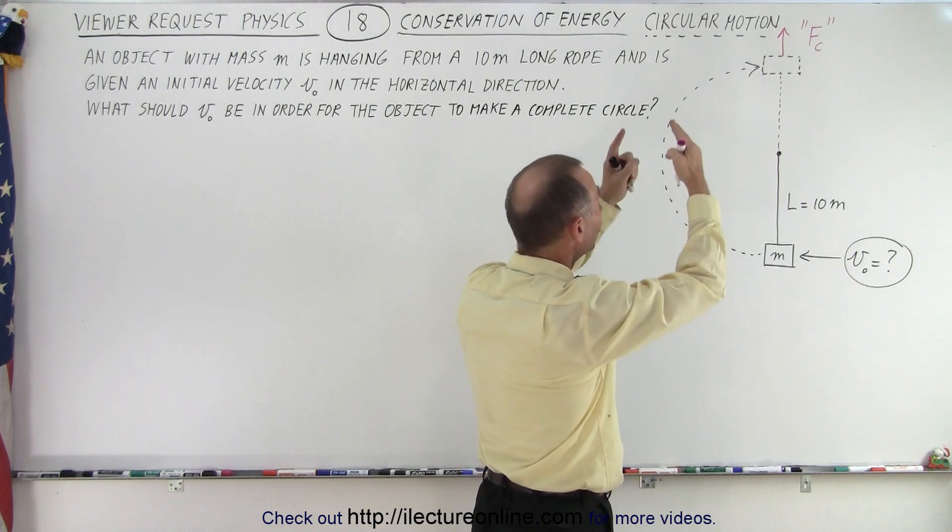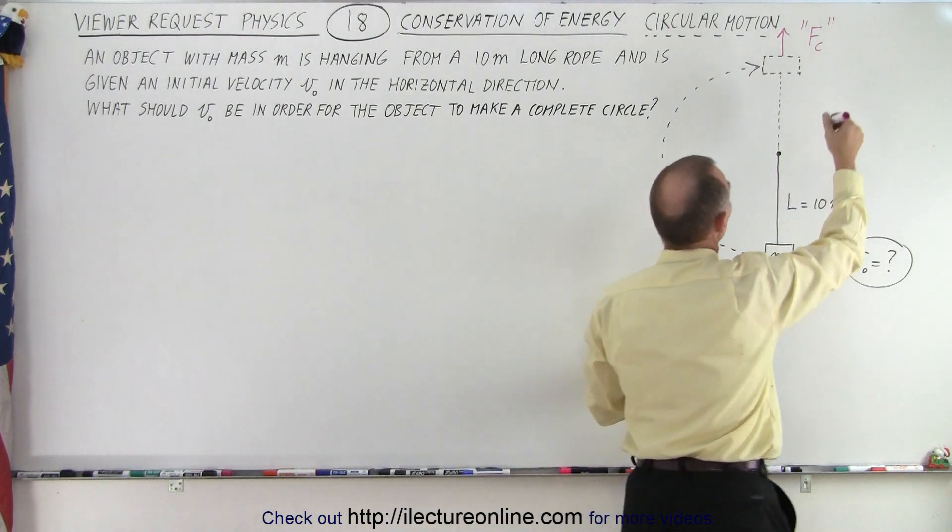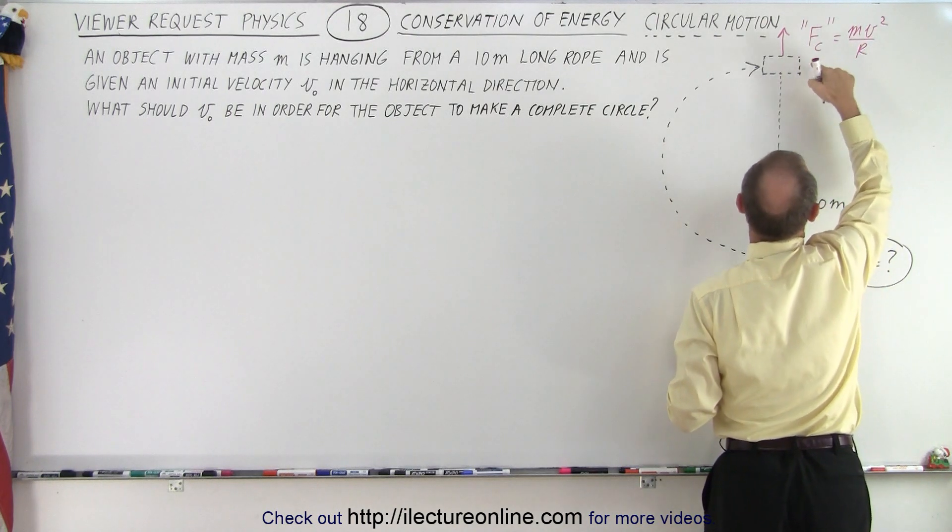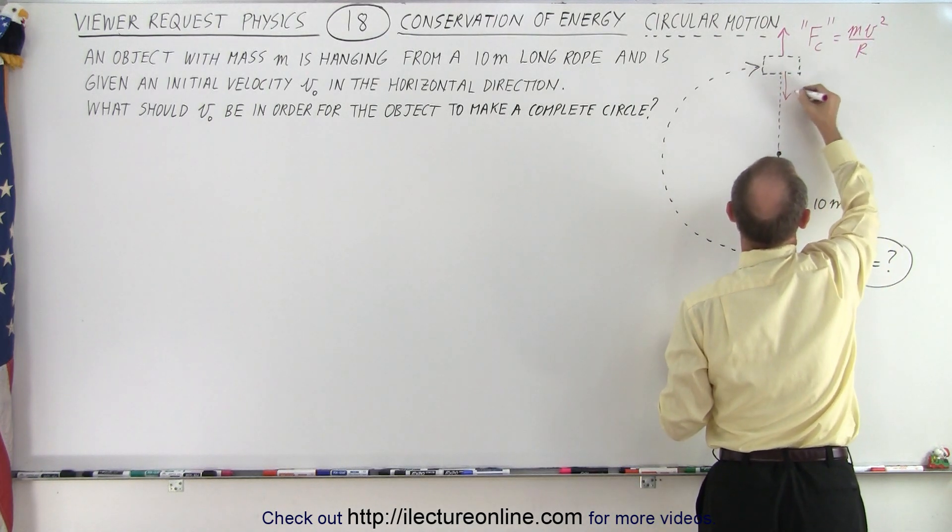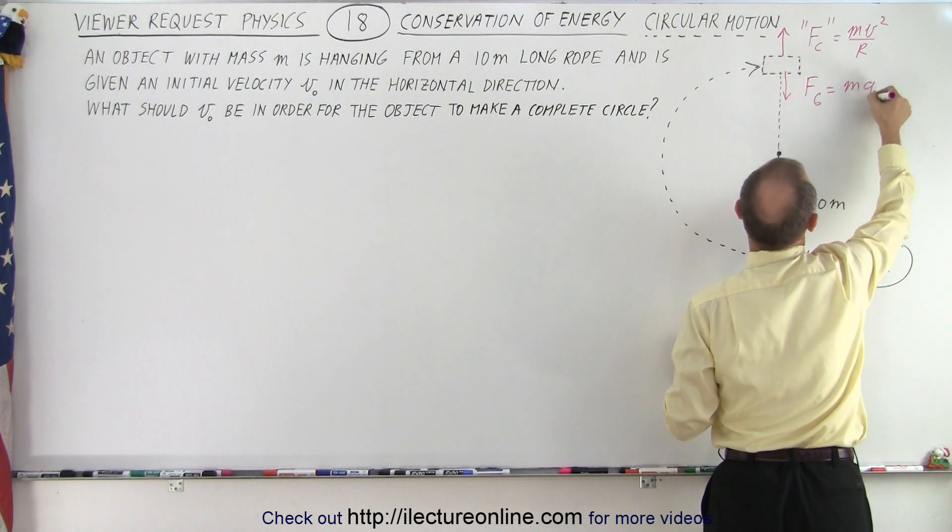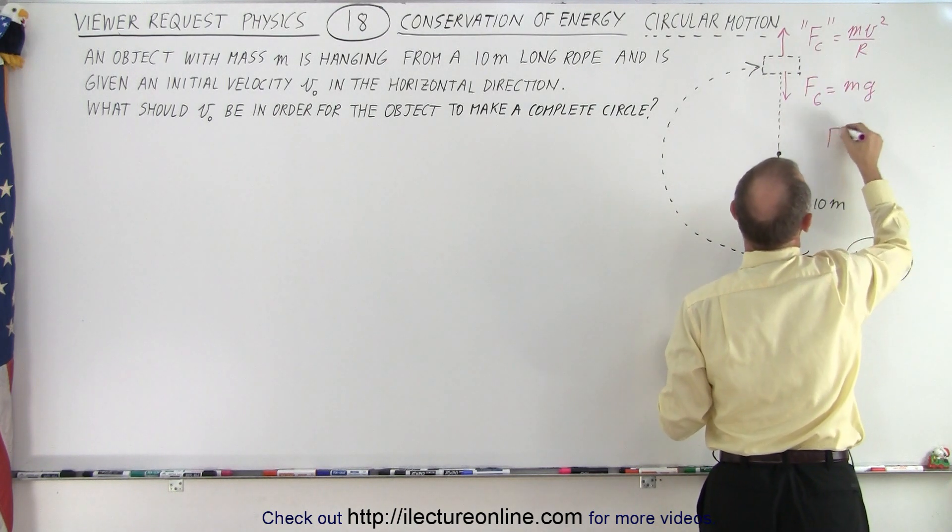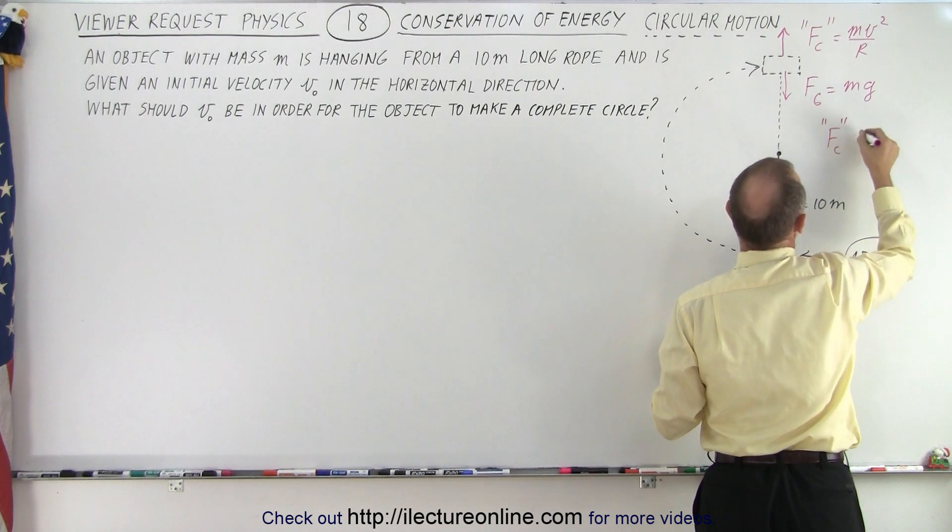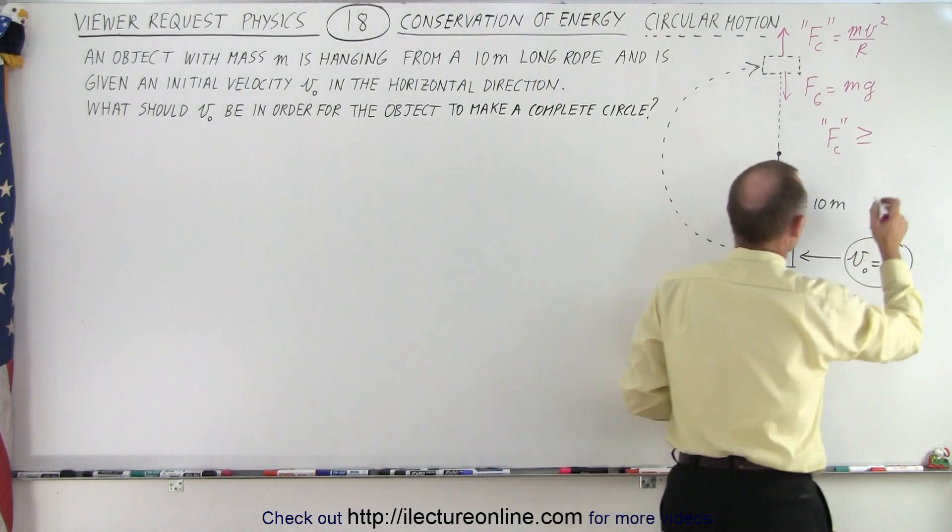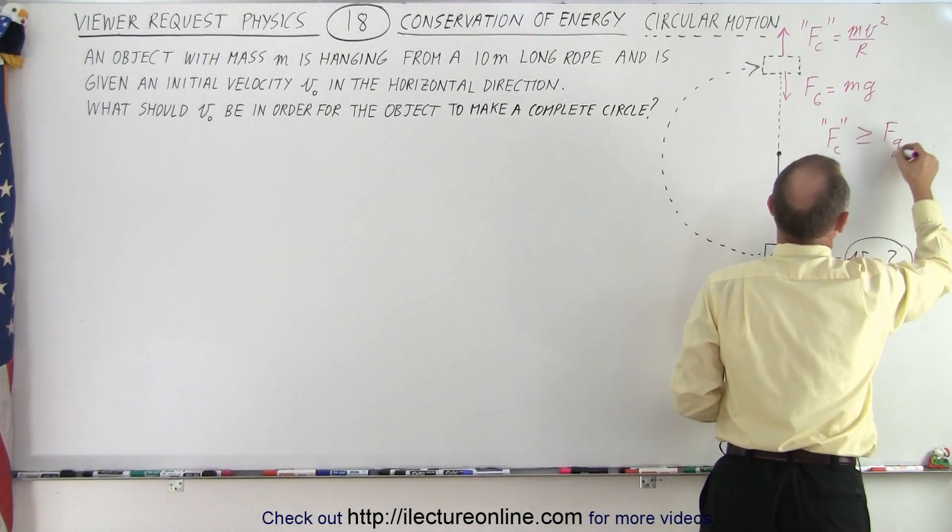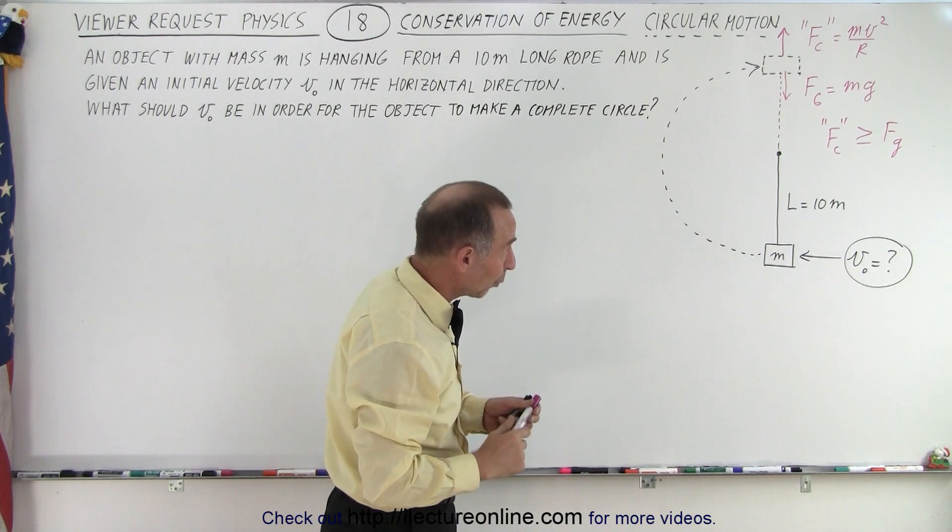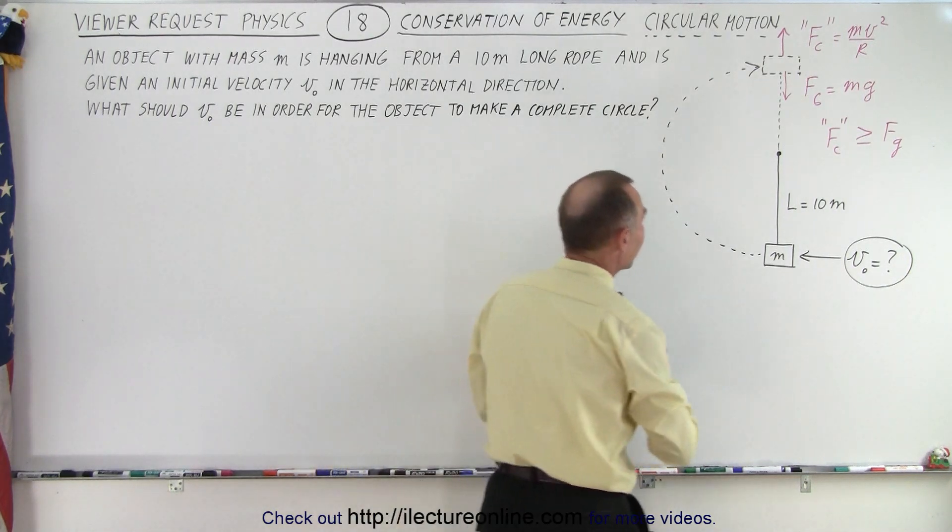The fictitious force pushing it outward due to its motion which can be written to be equal to MV squared over R should be greater than the force pulling it downward which is the force due to gravity which is equal to MG. So we want F sub C, the centrifugal force to be greater than or it could be equal to the gravitational force. So that's the requirement.